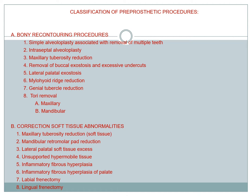The classification of pre-prosthetic surgery includes several categories. Bony recontouring procedures include: simple alveoloplasty, intraseptal alveoloplasty, maxillary tuberosity reduction, removal of buccal exostoses and undercuts, lateral palatal exostoses, mylohyoid ridge reduction, genial tubercle reduction, tori removal (maxillary and mandibular). Correction of soft tissue includes: maxillary tuberosity reduction, retromolar pad reduction, lateral palatal soft tissue excess, unsupported hypermobile tissue, inflammatory fibrous hyperplasia, inflammatory fibrous hyperplasia of the palate, labial and lingual frenectomy.